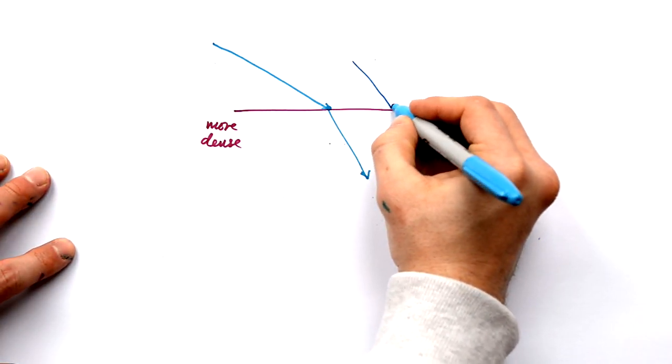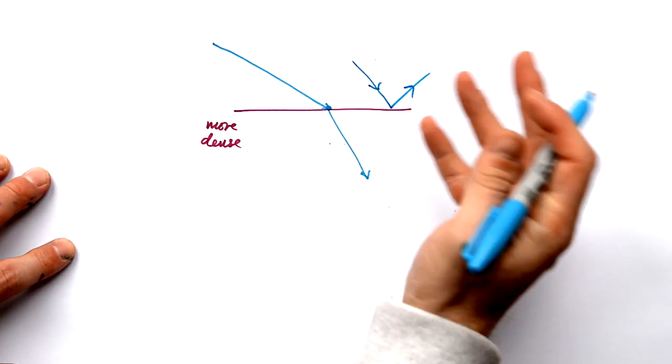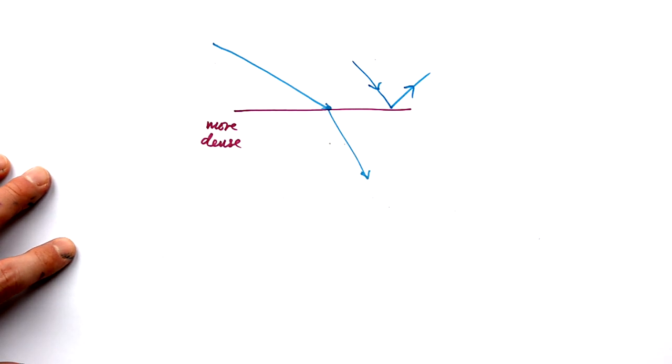Newton, however, could explain reflection using his idea of corpuscles because we know that's what particles do.